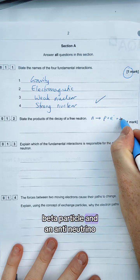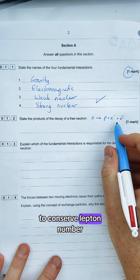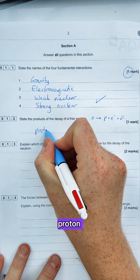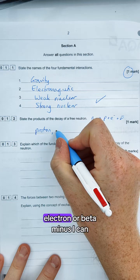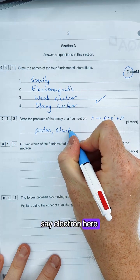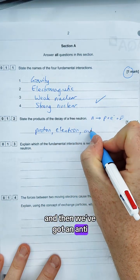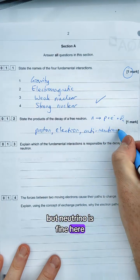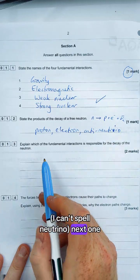And an anti-neutrino to conserve lepton number. So therefore we are going to have just to list them down here: proton, and we've got electron or beta minus, I can see electron here, and then we've got an anti-neutrino. It would be technically an electron neutrino but neutrino is fine here.